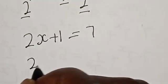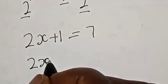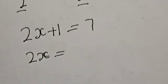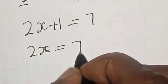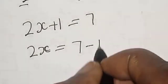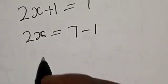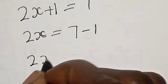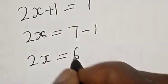Now this is 2s is equal to 7 minus 1. 2s is equal to 6.